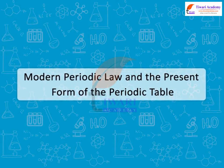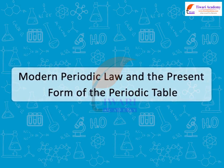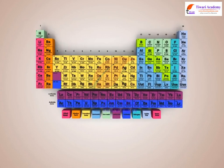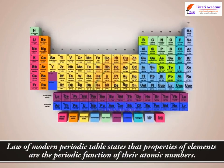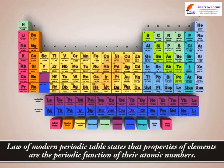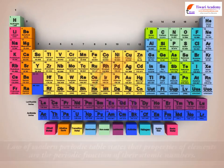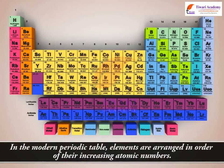Modern Periodic Law and the Present Form of the Periodic Table. The Law of Modern Periodic Table states that properties of elements are the periodic function of their atomic numbers. In the Modern Periodic Table, elements are arranged in order of their increasing atomic numbers.